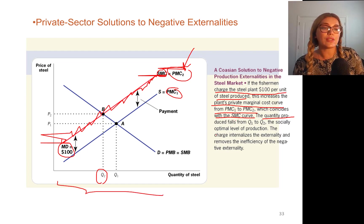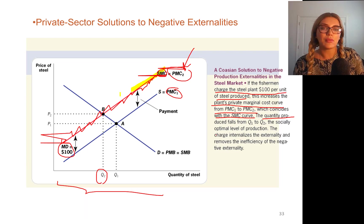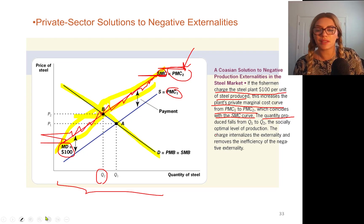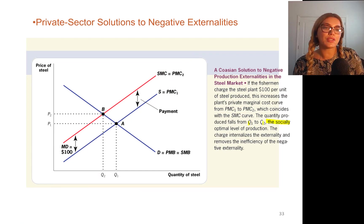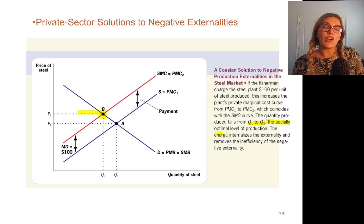So the quantity produced will fall. Looking at the graph: private marginal cost, social marginal cost, and social marginal benefit — Point B will be the socially optimal level. And the socially optimal level of production is actually achieved by assigning these property rights. This charge of a hundred dollars by fishermen to the steel factory internalizes the externality and removes the inefficiency of the negative externality.